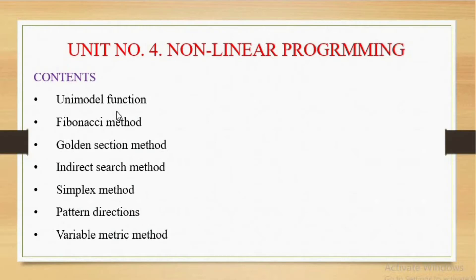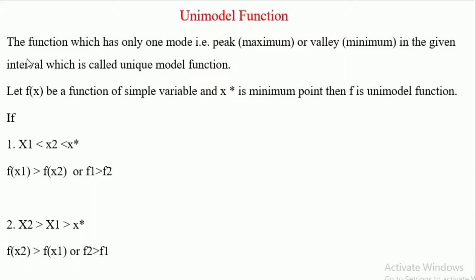So this is the unimodal function — the function which has only one mode. Mode means either it is a peak or either it is a valley. So peak is the maximum and valley means minimum. So one mode is peak or valley in the given interval, which is called a unimodal function.